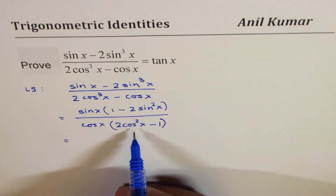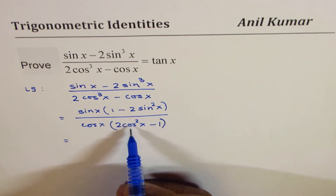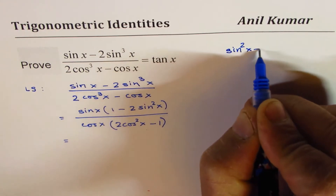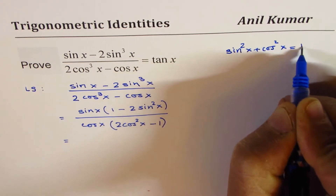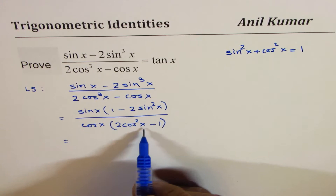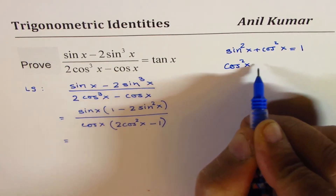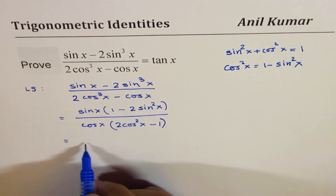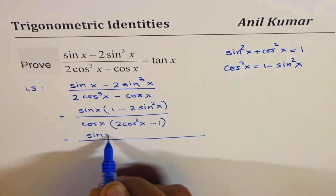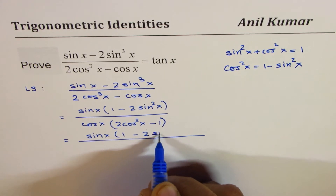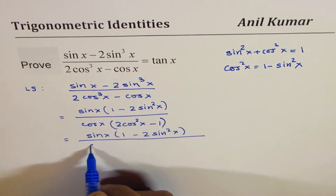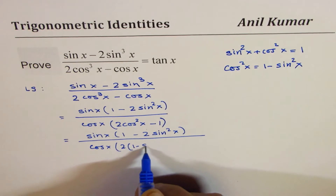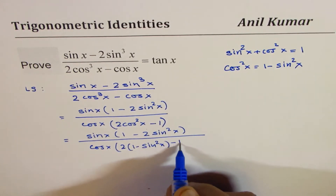What we are really interested in doing is to cancel out that component. Since we have sine square x and cos square x, we could change either one of them using the Pythagorean identity, which is sine square x plus cos square x equals to 1. So if I want to change cos square x, I will write cos square x as 1 minus sine square x. So we will change the denominator, keeping the numerator the same.